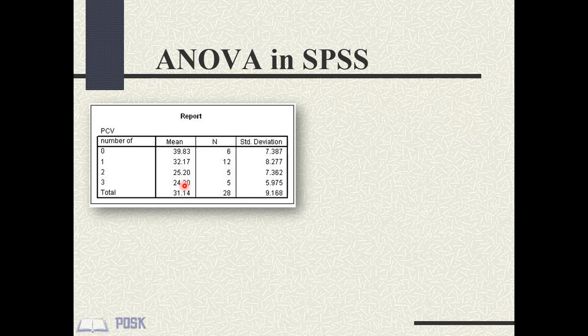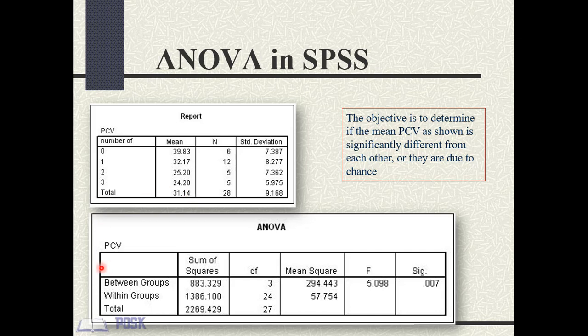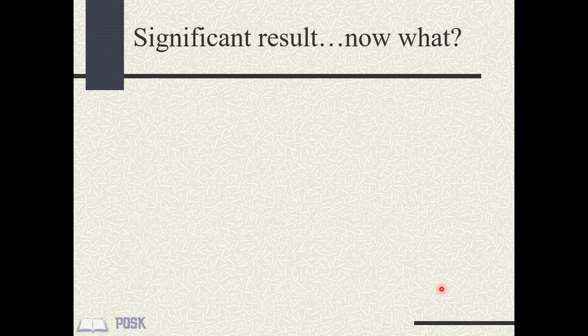The overall mean PCV is shown in the total row of the table. The research question is whether the differences in mean PCV are significantly different from each other or due to chance. This question is answered in the ANOVA table. The significance column (SIG) contains the p-value, which is 0.007. We therefore reject the null hypothesis and conclude that the mean PCV of patients is significantly different across categories of bones fractured.